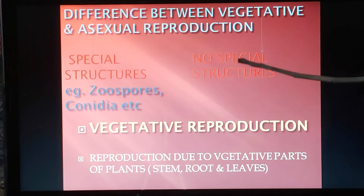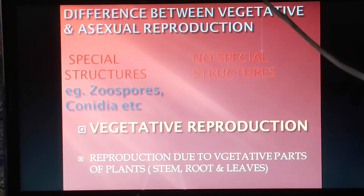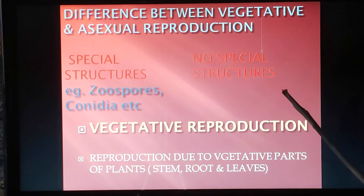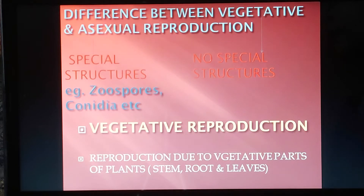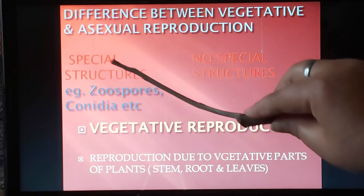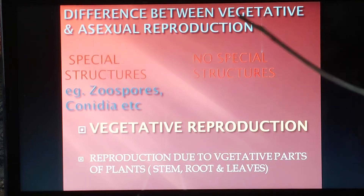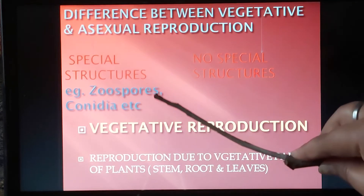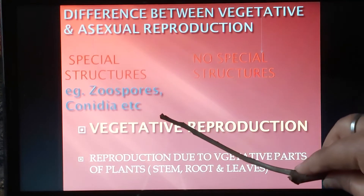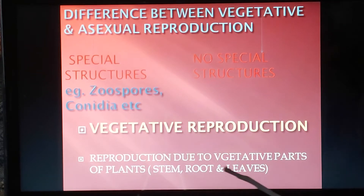Vegetative reproduction is one in which no special structures are produced. Any part of the plant — stem, root, or leaves — that reproduces is called the vegetative mode of reproduction. To repeat: asexual means some special structures like zoospores and conidia are formed, whereas in vegetative reproduction, stem, root, and leaves simply participate in reproduction.